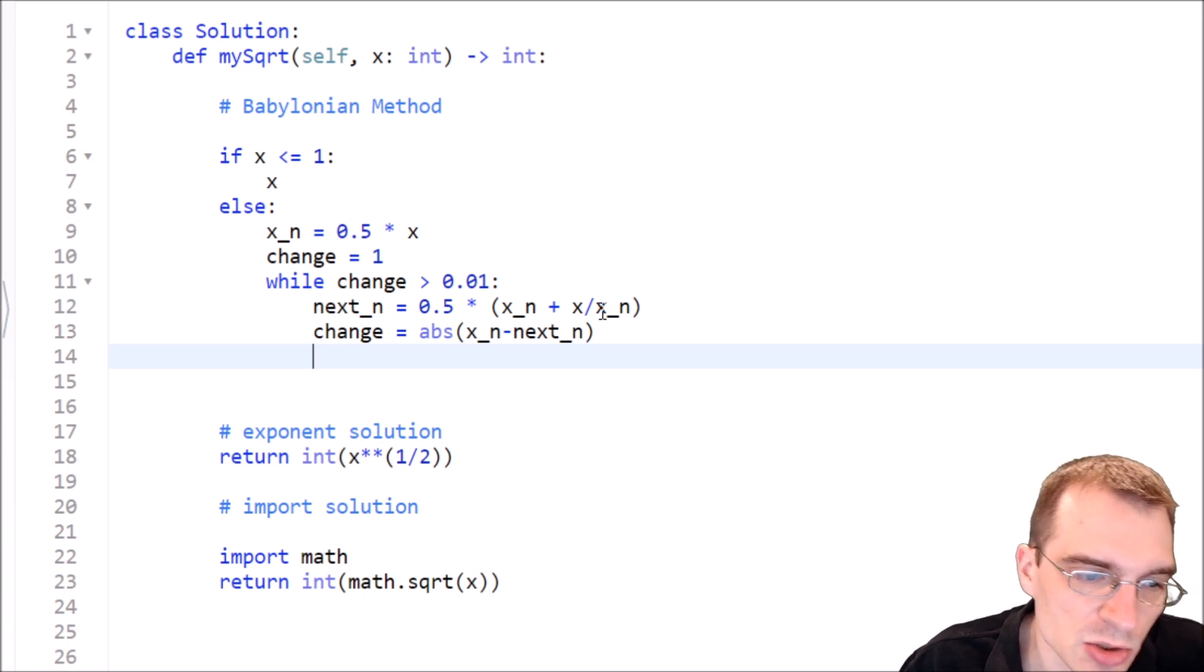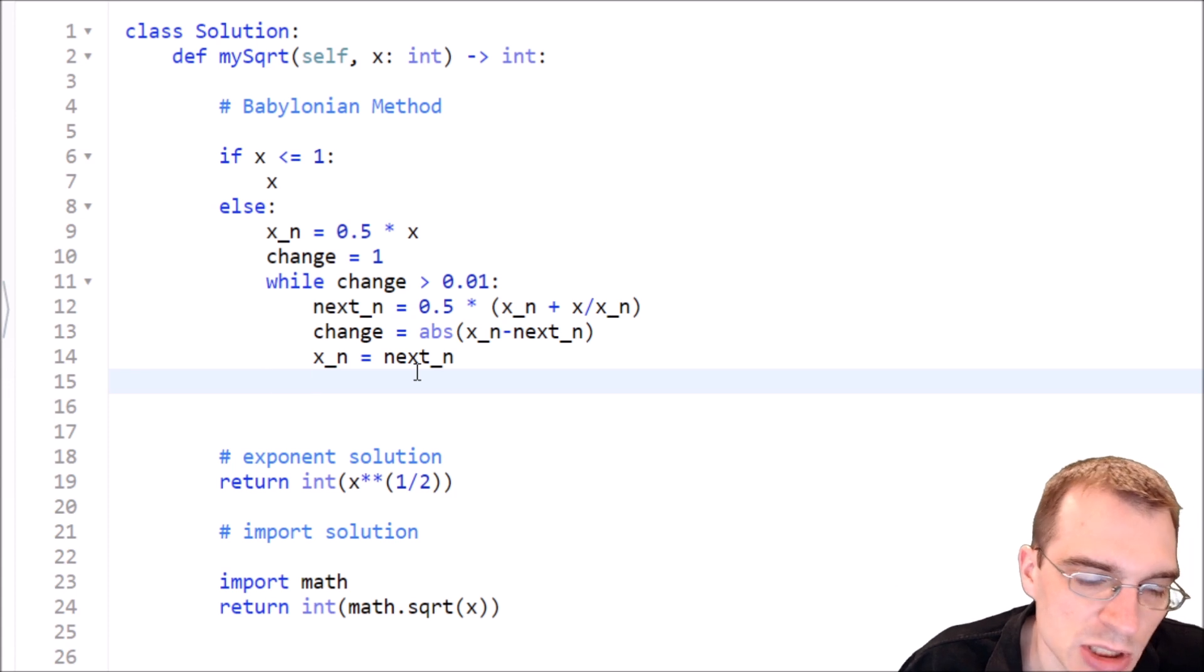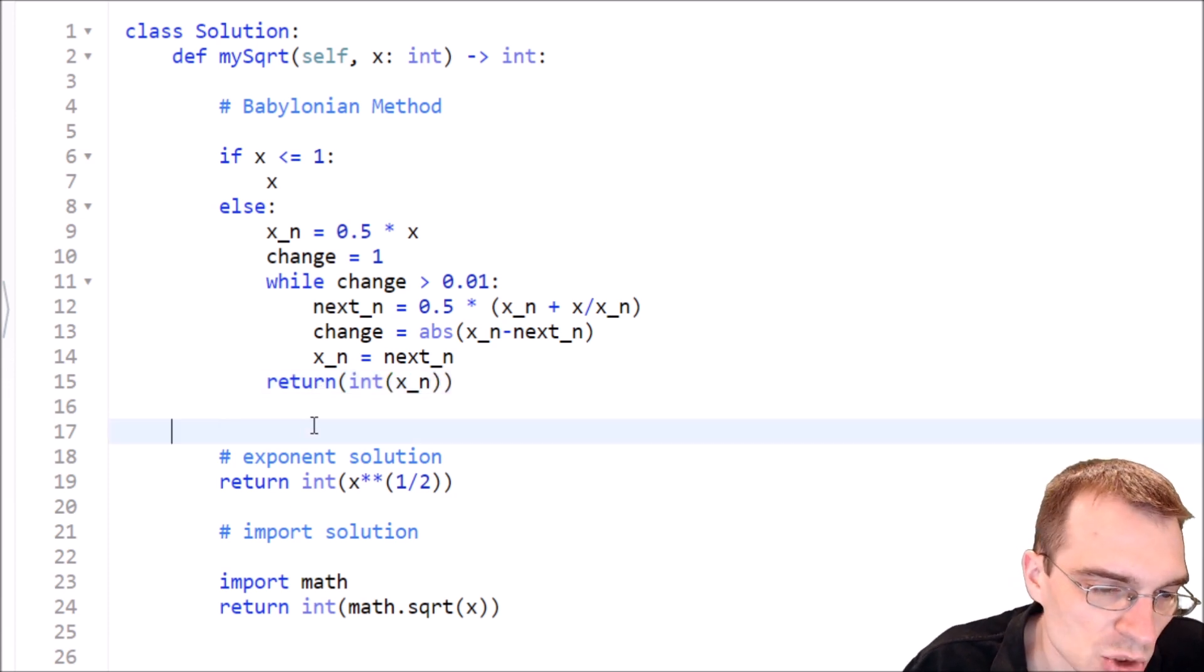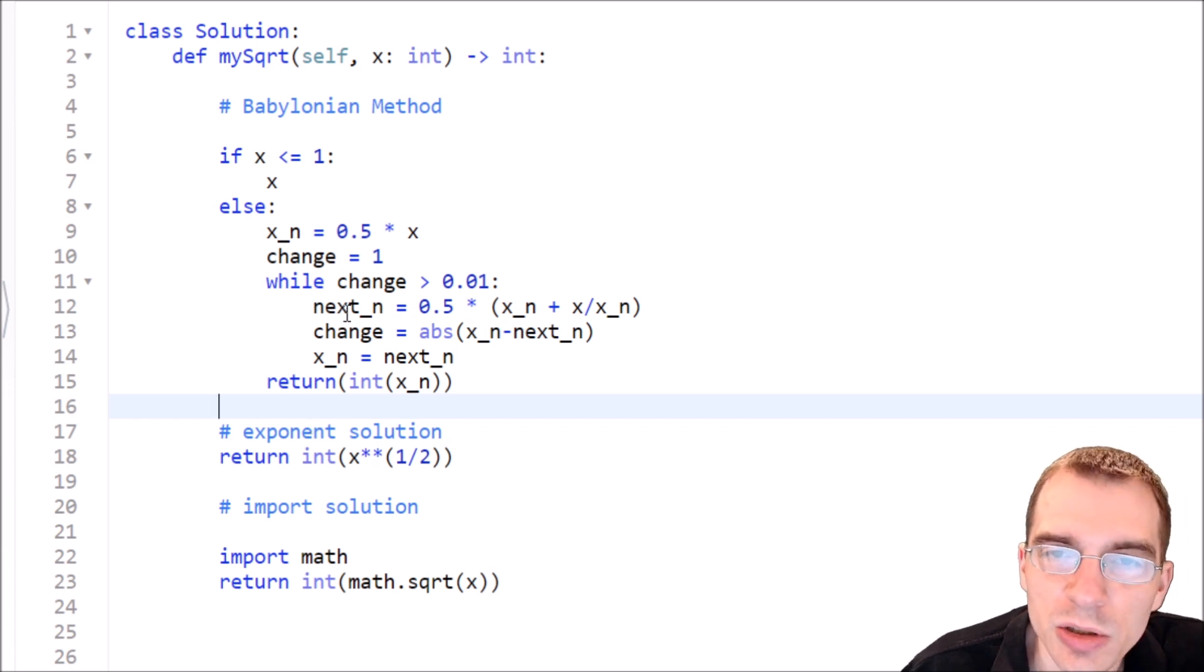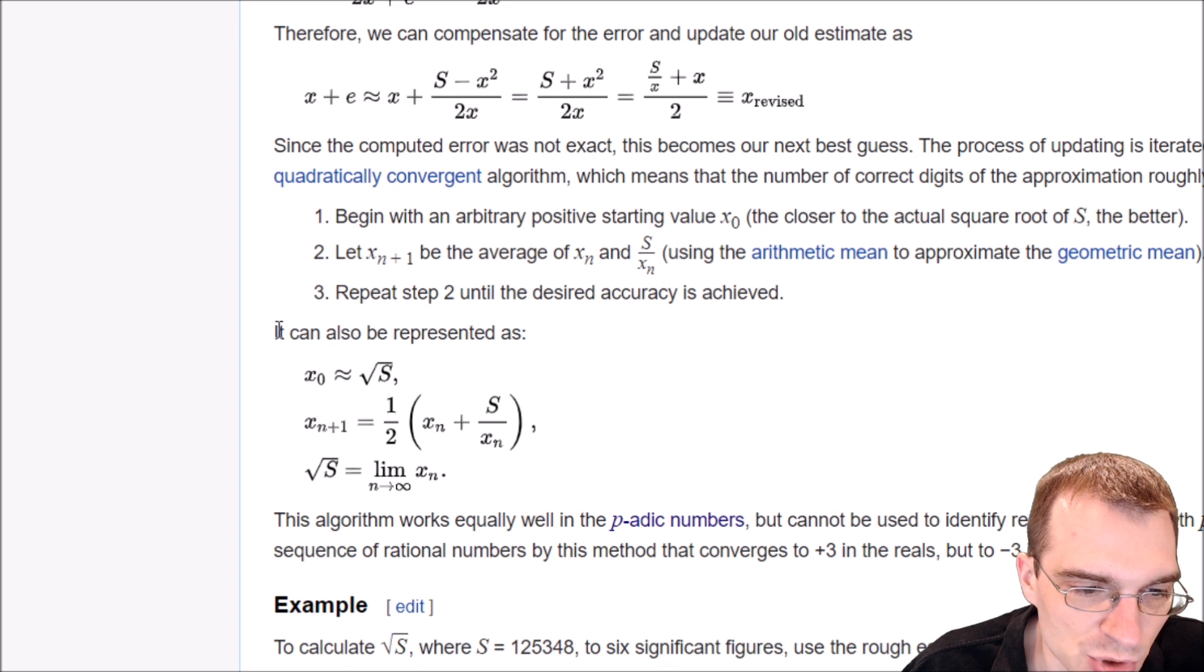And then we just need to do the update. So after that, we'll update our xn to equal the next n. And this while loop now will just keep running and finding a better approximation of the square root until the change seen from one iteration to the next is less than 0.01. That should end up being a pretty close approximation to the square root. So at that point, we can just return the int of our xn that we are finding the approximation for. So this should essentially be a working implementation of this function that was shown in Wikipedia.